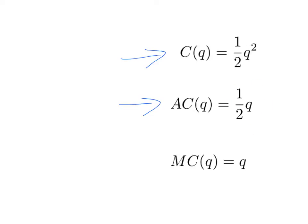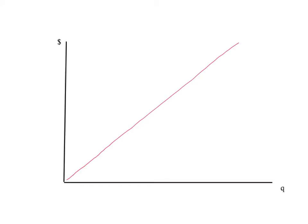Here we have our axes again. Marginal cost is a straight line of slope one — exactly the same as before. At a quantity of 1, marginal cost equals 1; at a quantity of 2, marginal cost equals 2; at a quantity of 3, and so on.